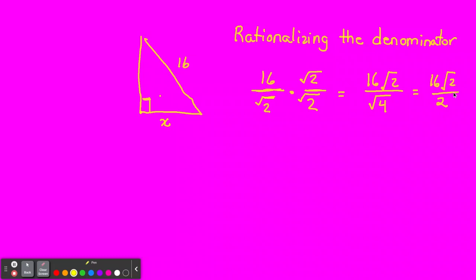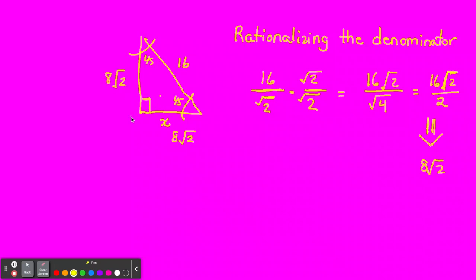Square root of 2 is irrational — like pi, it just keeps going with no pattern. You can simplify 16√2 over 2, and you'll get 8√2. That's the answer. So x will be 8√2, and since it's a 45-45-90, the other side will also be 8√2.